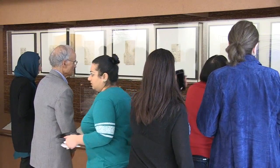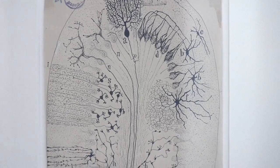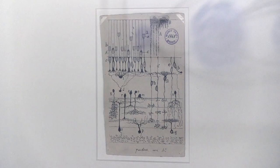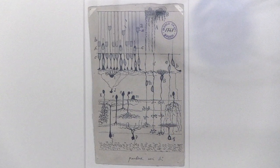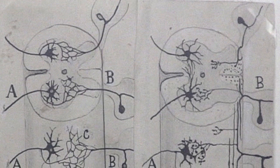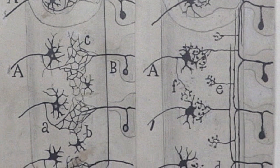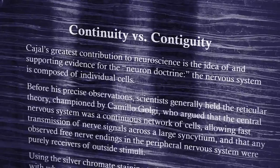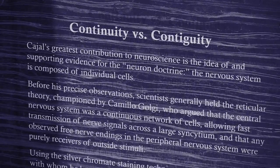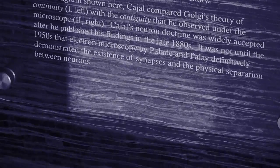We have a couple of his most famous drawings: one of the hippocampal formation, one of the cerebellar cortex, a beautiful drawing of the retina — which is my personal favorite because that's the area of the brain that I study — and in particular, a drawing where Cajal explained the difference between his theory of contiguous but discrete neurons in the brain, and Camillo Golgi's theory that the brain was a syncytium.